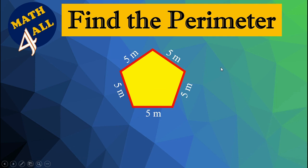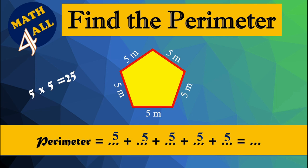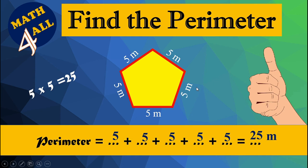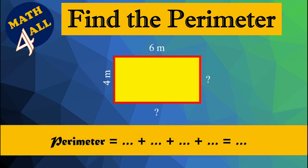Let's find the perimeter of this pentagon. You will add five, five times, which means 25. Just 25? No — 25 meters. Now let's go to the next example.